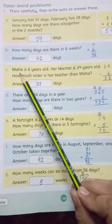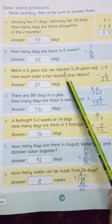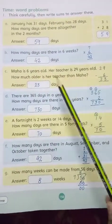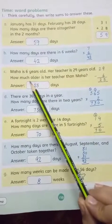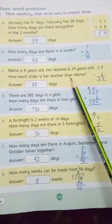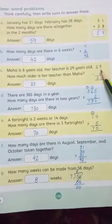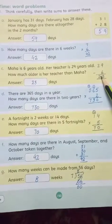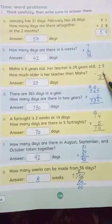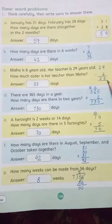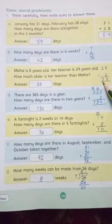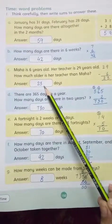Next, Problem C: Maha is 6 years old. Her teacher is 29 years old. Now how much older is her teacher than Maha? Now we have to write the answer is 23.